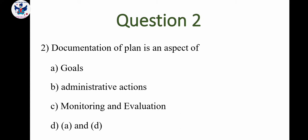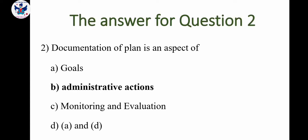Next question: Documentation of a plan is an aspect of — A: goals, B: administrative actions, C: monitoring and evaluation, D: A and D. The correct answer is administrative actions. Documentation of a plan is based on the aspect of administrative actions.